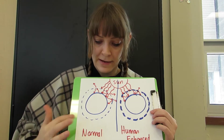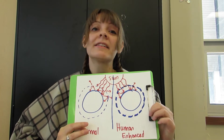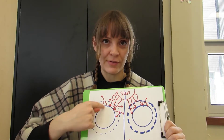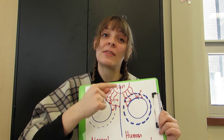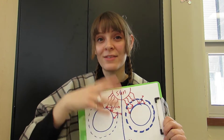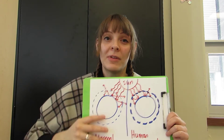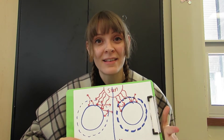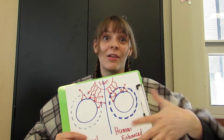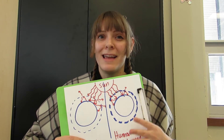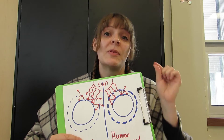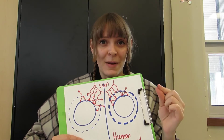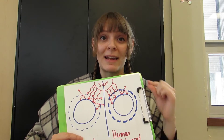Here we have a comparison: the normal greenhouse effect versus the human-enhanced one. The first thing to notice is the dotted line around both Earths — I've drawn this one thicker to indicate there are more greenhouse gases in the atmosphere. Now realistically, the amount of greenhouse gases we have put into the atmosphere compared to all of the air around the Earth is a very small percentage, but that small percentage makes a huge impact on global warming and climate change.